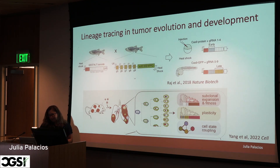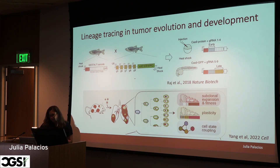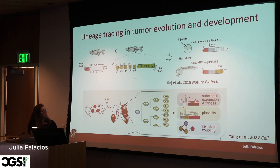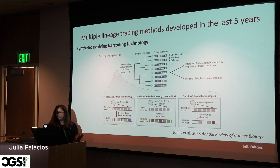Lineage tracing methods aim to trace the ancestry of a sample of cells. Linear lineage tracing approaches have been developed and employed in many tumor models and during development, providing important insights about evolution. For example, in the study of zebrafish it was used to study the evolution of the brain, and for understanding cancer in mice it has been used for understanding lung cancer. There are multiple methods that have been developed in the last 10 years.